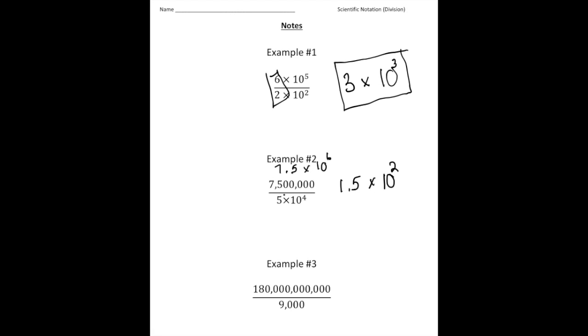So again, I converted 7,500,000 into scientific notation. Then I divided 7.5 by 5, I got 1.5. And then I divided 10 to the 6th by 10 to the 4th, and that's how I got 10 squared.